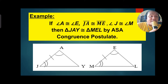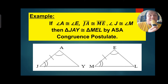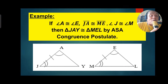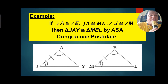Looking at the two triangles: Angle A is congruent to Angle E. In our figures, Side GA in the first figure is congruent to Side ME. And Angle J is congruent to Angle M. Therefore, Triangle JAY is congruent to Triangle MEL by the ASA Congruence Postulate.